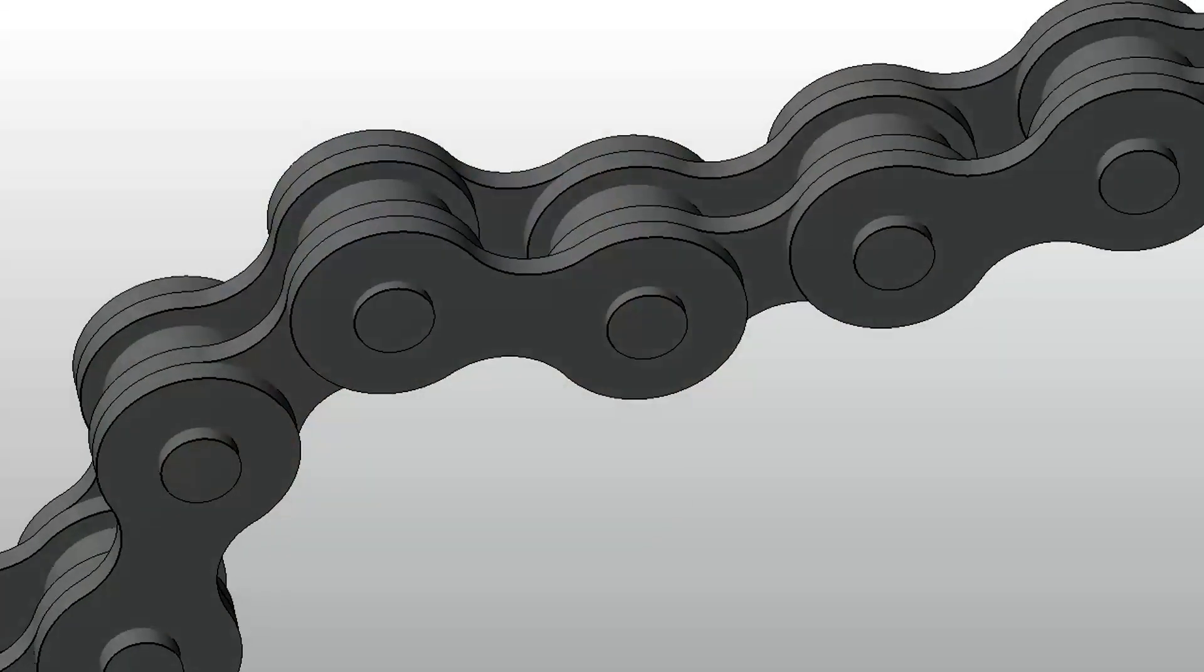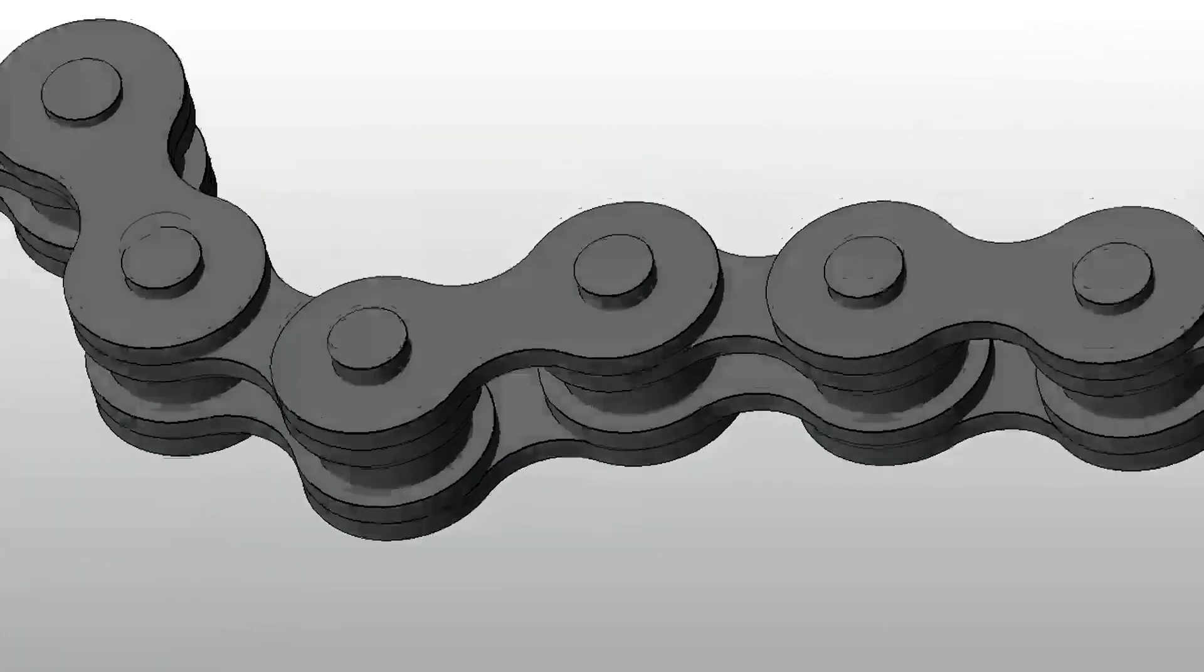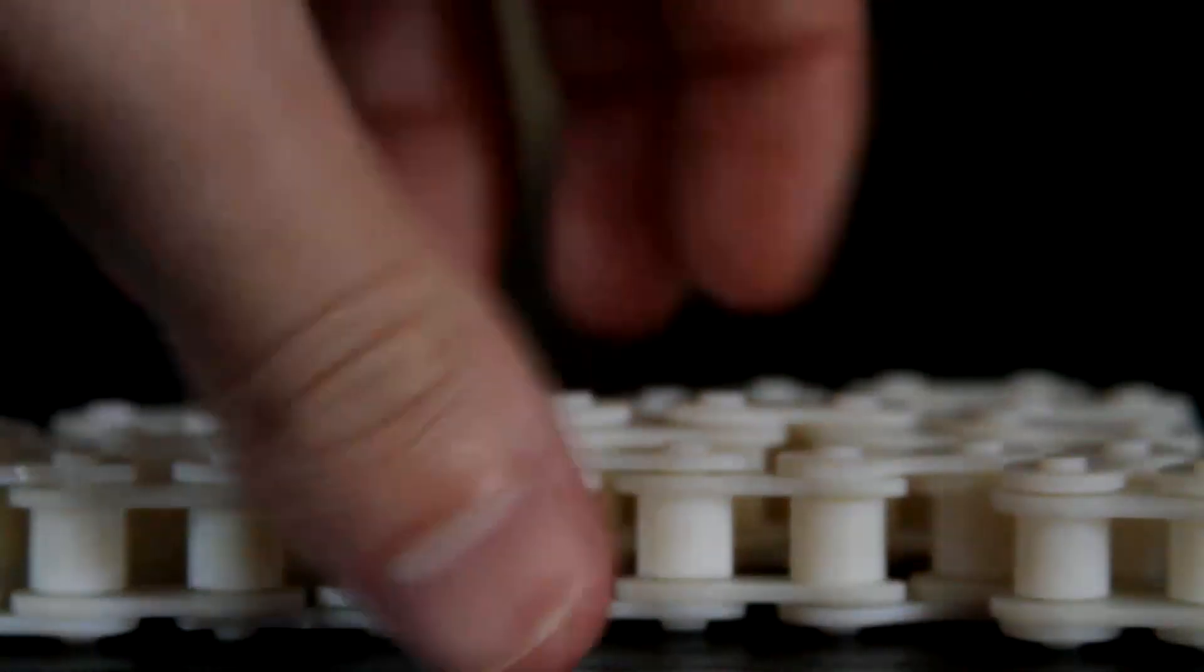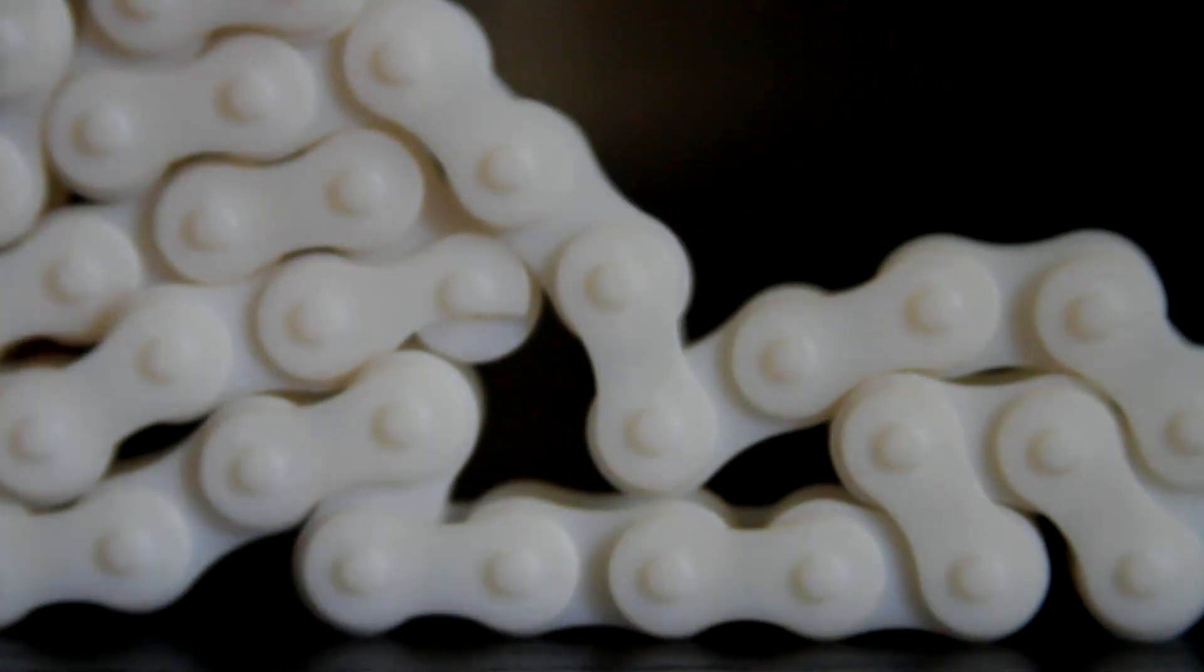And finally, we have a bicycle chain, which as I'm sure you know, bicycle chains are made up of many different links which are all joined together. However, with a 3D printer, you can see that a functioning chain can be built all as one piece, no assembly required.